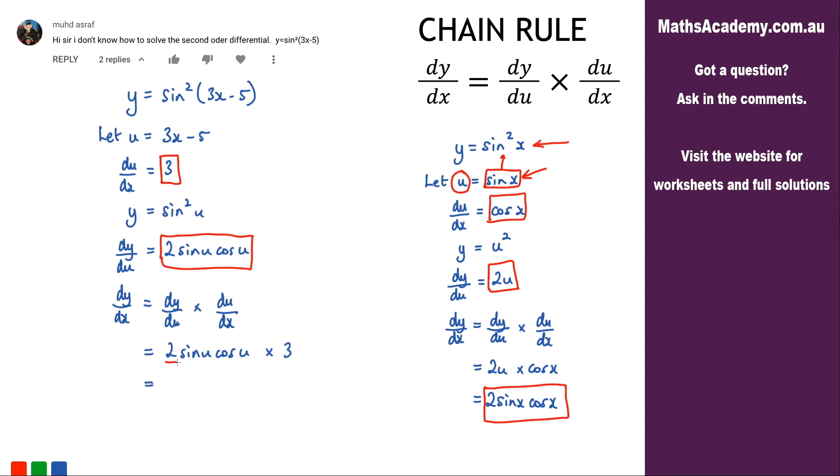Now if I take this 2 and this 3 that's 6 so I've got 6 sine u cosine u and therefore dy by dx is equal to the following. So what I'm going to do here is substitute back in for u and u is 3x minus 5 so what I've got is 6 sine of 3x minus 5 and cosine of 3x minus 5.